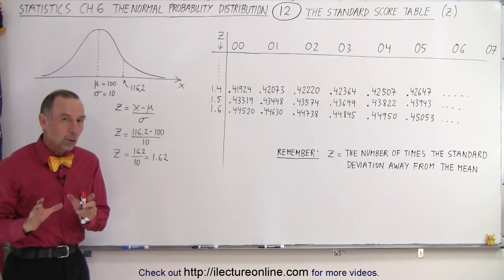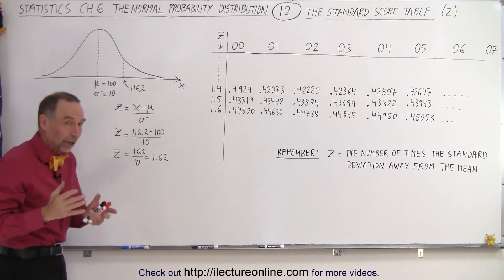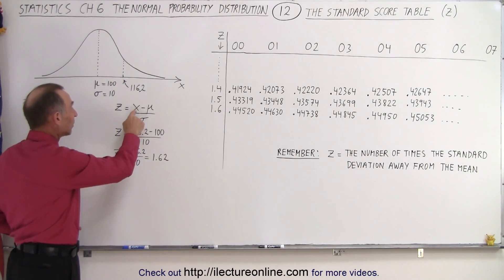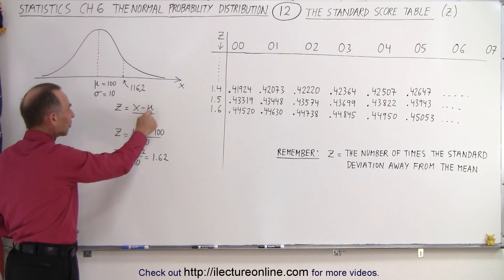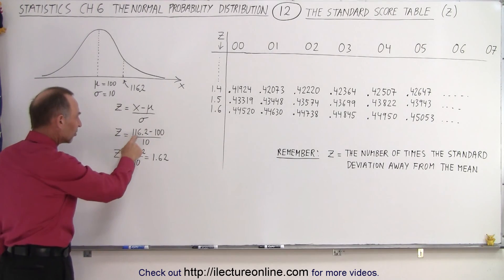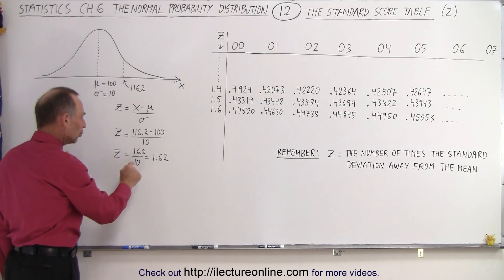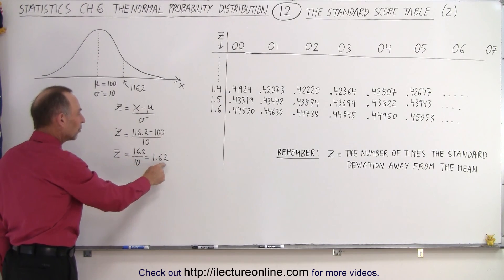So first of all, what is the Z value of that point? To find the Z value as we saw in the previous video, we take the value for X which is 116.2, we subtract from that the mean and we divide by sigma. So that means we get 116.2 minus 100 divided by 10 which is 16.2 divided by 10 which is 1.62.